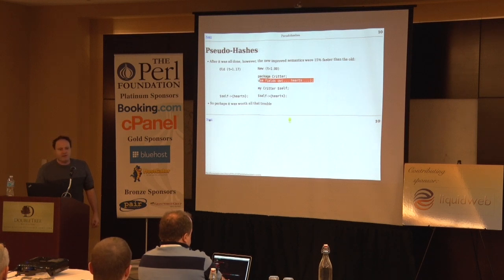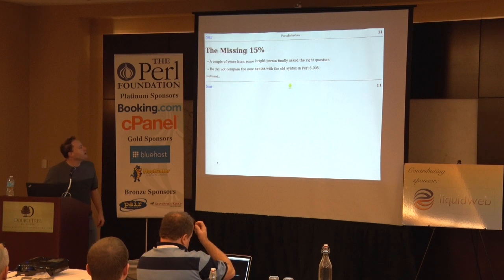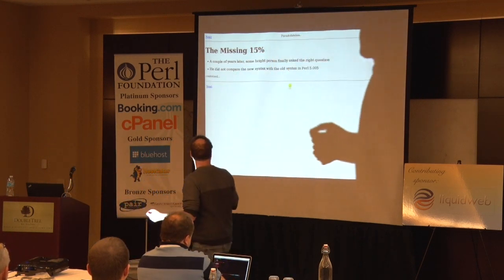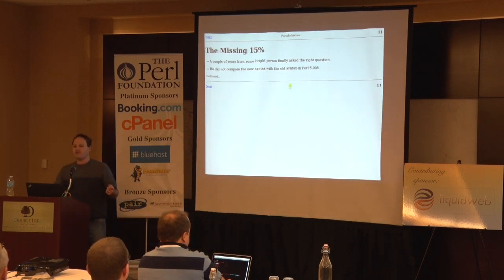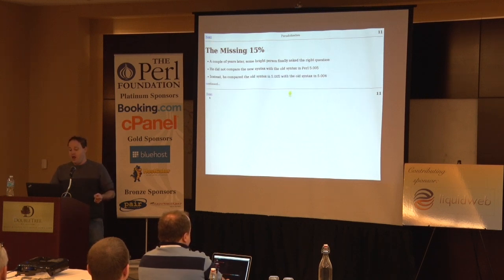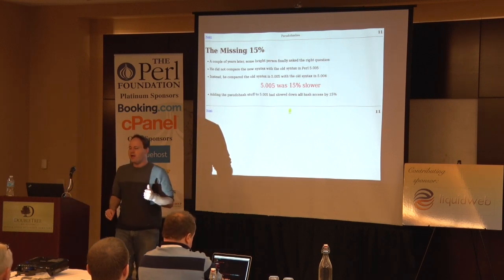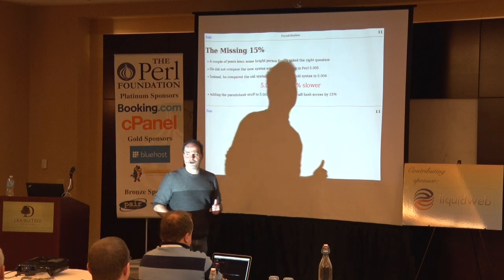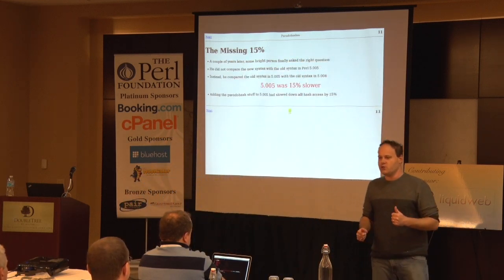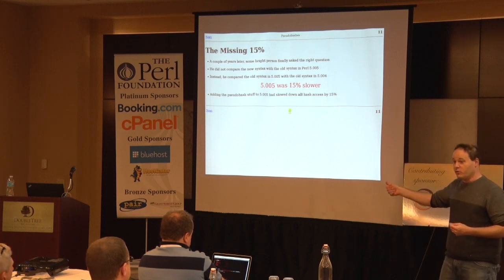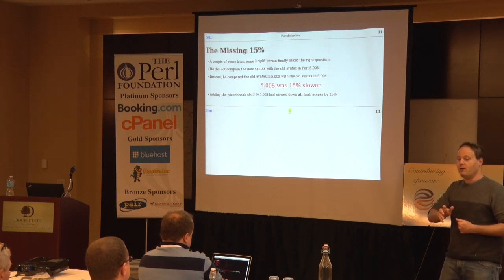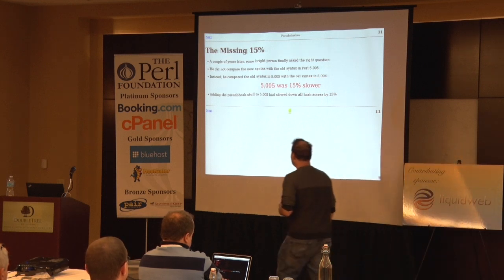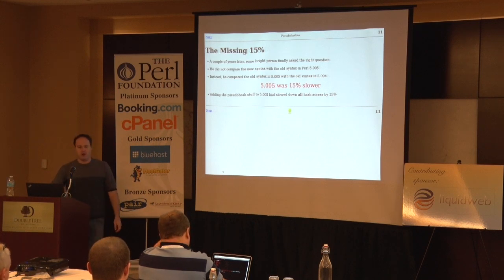But then after about a year, somebody actually asked the right question. Instead of comparing the speed of the new and old syntaxes in Perl 5.05, he compared the speed of the new syntax in 5.05 with the old syntax in 5.04. And he discovered that 5.05 — as a result of the pseudo-hash code infesting every part of Perl — was now 15% slower overall. If you used all the declarations and everything went perfectly, you got a speed-up just enough to get you back to where you had been before all this stuff was put in. But everything else that didn't do this was 15% slower.